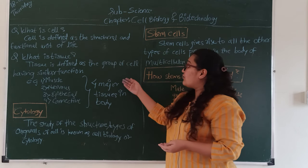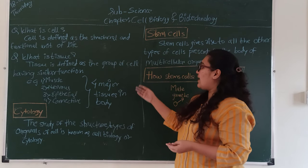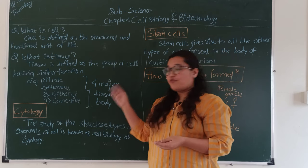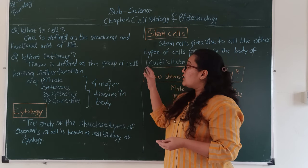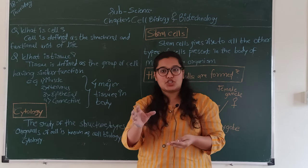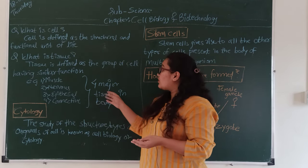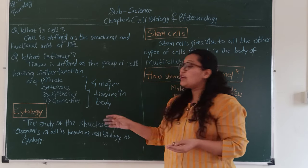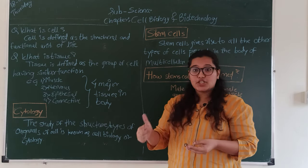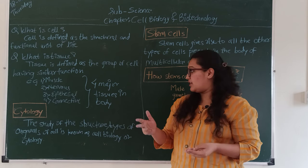Now let's look at what tissue is. Tissue is defined as a group of cells having similar function. When many cells come together, we get a tissue. There are basically four major tissues in our body: muscle tissue, nervous tissue, epithelial tissue, and connective tissue.